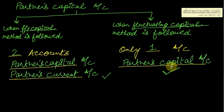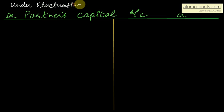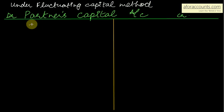Let's start with the fluctuating capital method, when only one account is maintained — partner's capital account. Under the fluctuating capital method, capital has a credit balance, since it is on the liability side of the balance sheet. So we will put the opening balance of capital on the credit side — that is, by balance brought down — which represents the opening capital of the partner.